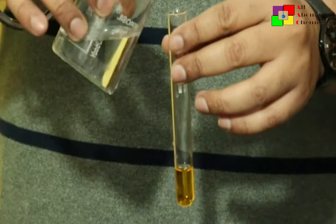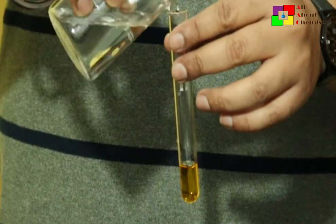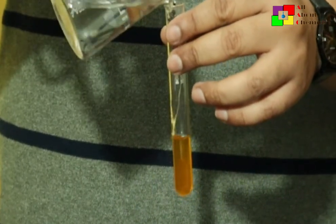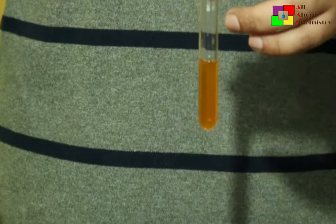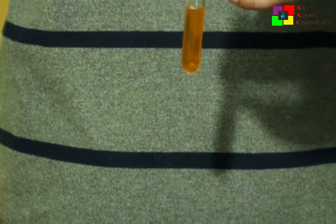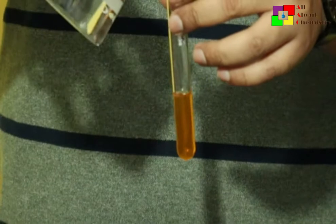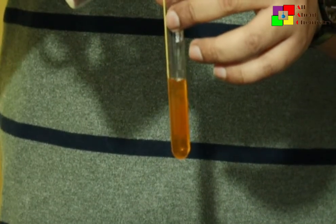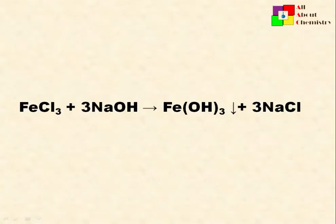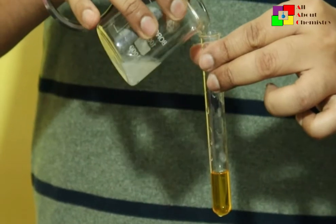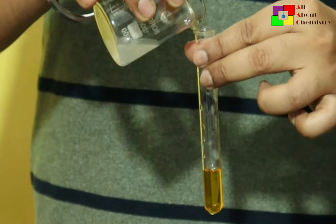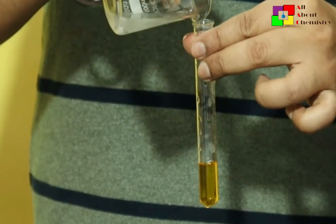Moving to ferric salt — when ferric salts are treated with sodium hydroxide solution, we get a reddish-brown precipitation which is insoluble in excess sodium hydroxide. This reddish-brown precipitation is due to the formation of ferric hydroxide. For ammonium hydroxide, we get the similar observation.